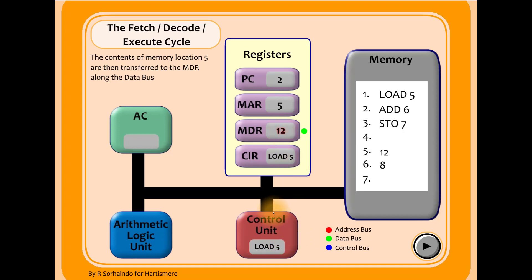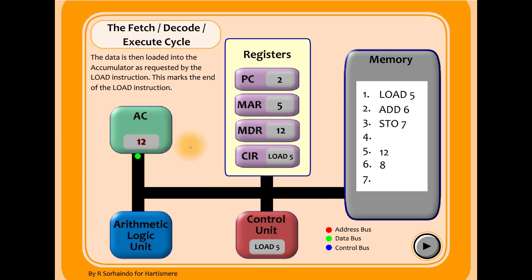The current instruction in the control unit is to load that value, so the data travels along the data bus and gets loaded into the accumulator. The accumulator now holds the value twelve, which came from address five. That is the end of executing the load instruction — we have successfully loaded the value twelve from memory address five into the accumulator.